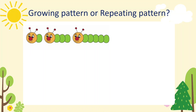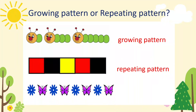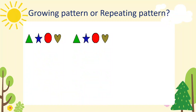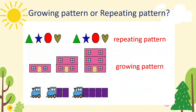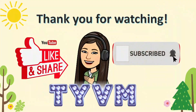Is it a growing pattern or a repeating pattern? Yes, it's a growing pattern. Next — correct, it's a repeating pattern. Next — right, it's a repeating pattern. How about this one? Correct, it's a repeating pattern. Right, it's a growing pattern. Right, it's a growing pattern. Yes, it's another growing pattern. Very good — that's it for today!